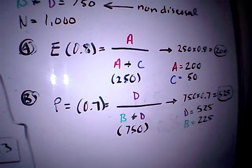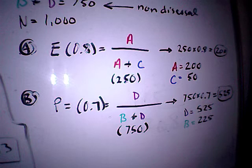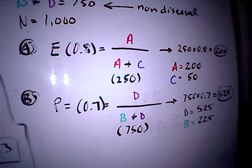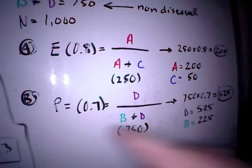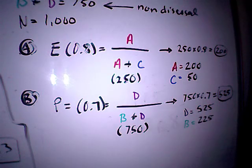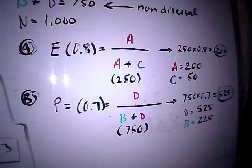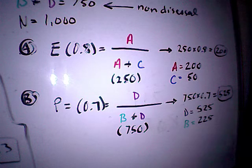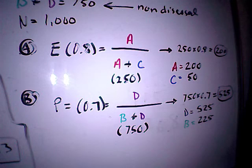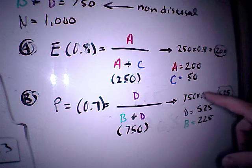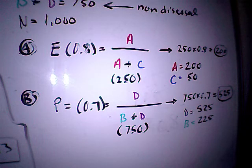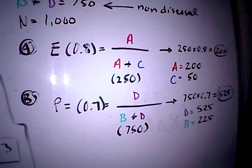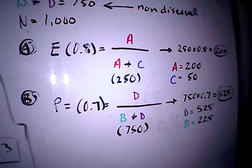I'll do the same thing with P, or the specificity. Again, the specificity is 70%, or 0.7, and B plus D from up here equals 750, or a number of non-diseased people. We'll set 0.7 equals D divided by B plus D, and we know that B plus D is 750. Let's multiply by 750. 750 multiplied by 0.7 equals 525, so D must equal 525, which means that B must equal 225.